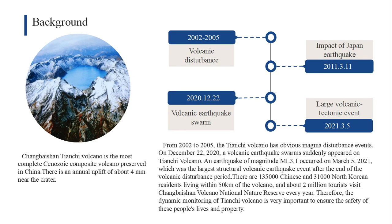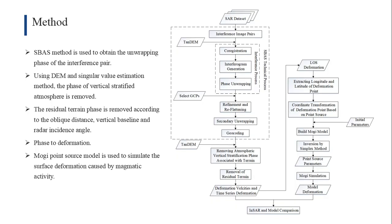Changbaishan Tianchi volcano, located on the border of China and North Korea, is the most active volcano with potential eruption risk in China. Since 2002, the volcano has shown some signs of activity. Recent volcanic seismicity records also indicate signs of unrest since 2020, which has drawn the attention of geophysicists.